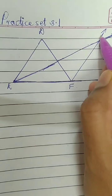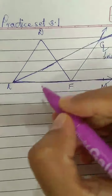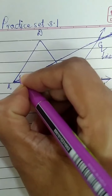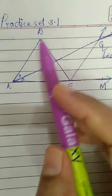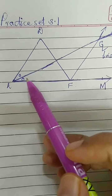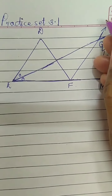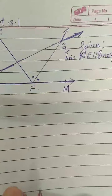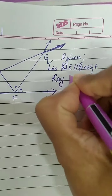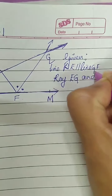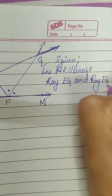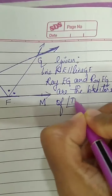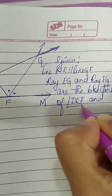Now, they are saying Ray EG and Ray FG are bisectors. Ray EG will be the bisector of angle DEF — bisector means it divides the angle into two equal parts. And FG is the bisector of angle DFM. So we write: Ray EG and Ray FG are the bisectors of angle DEF and angle DFM.